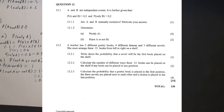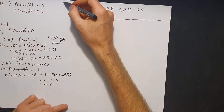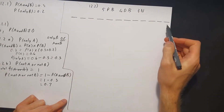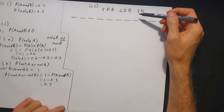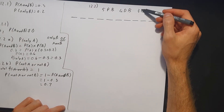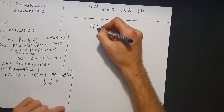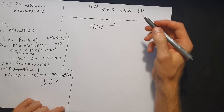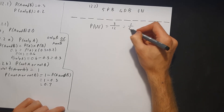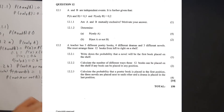Now question 12.2: a teacher has five different poetry books, four different drama books, and three different novels. She must arrange 12 books from left to right on a shelf. Question 12.2.1 asks for the probability that a novel will be the first book placed on the shelf. There are 12 spots and a total of three novels, so the probability equals 3 divided by 12, which simplifies to 1 over 4.